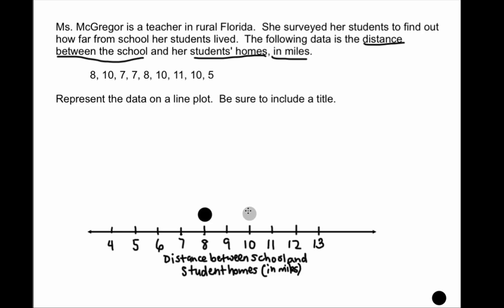An important thing to pay attention to: the circles need to line up with each other going across — all the circles at one level need to be in a straight horizontal line. The next number is 7, so I place a circle where 7 is, making sure they're all lined up. The next one is also 7, so I place a dot on top of that.